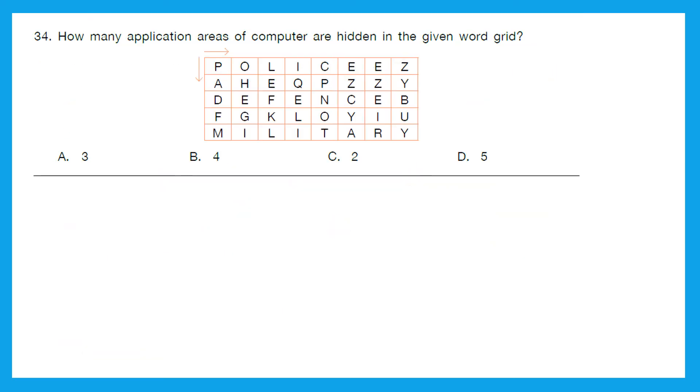Question 34: How many application areas of computer are hidden in the given word grid? Great, let's find it. The first one which I got is police. The second one is defense. And the third one is military. Let's find if there is anything else. No, I could not find it. So the right answer over here is A3.